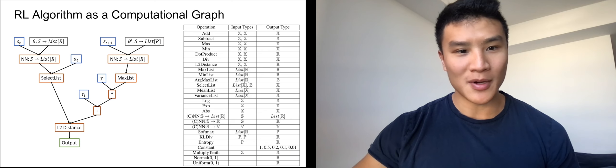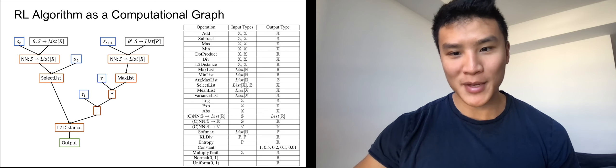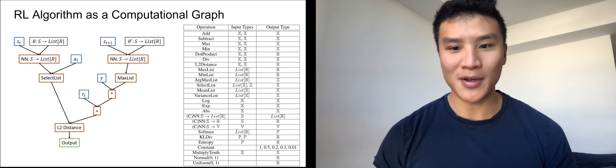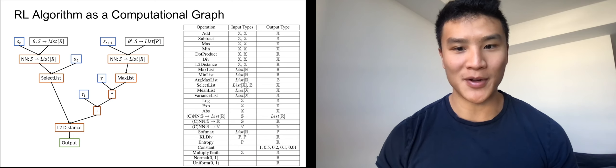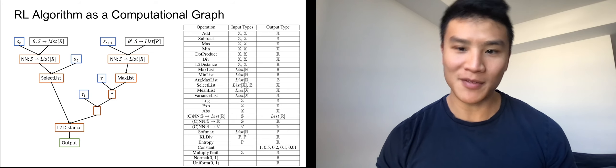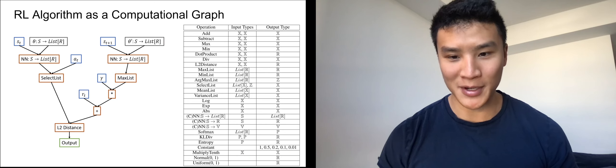For our search space, we use generic operators such as basic math operators, but also transformation operators that can go from, for example, state to real value or state to a list using a neural network.